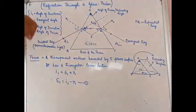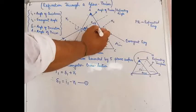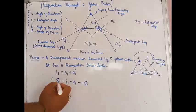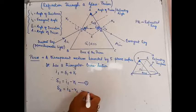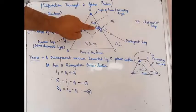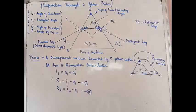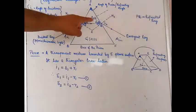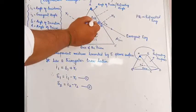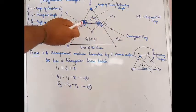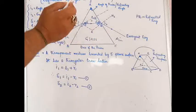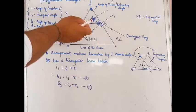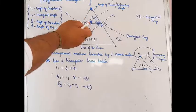Going to the second surface, similarly I can write this angle as delta 2, and delta2 = I2 - R2, based on the same concept. So the deviation delta2 at the second surface is I2 minus R2. Now, looking at the small triangle PQS, this delta — which is the total deviation — is the exterior angle to this triangle.